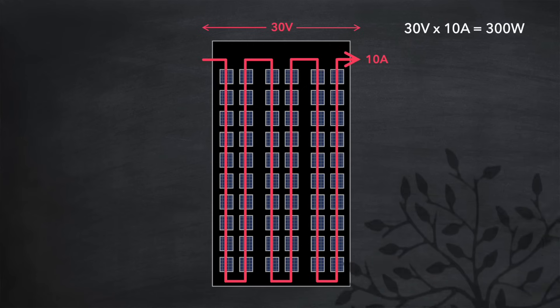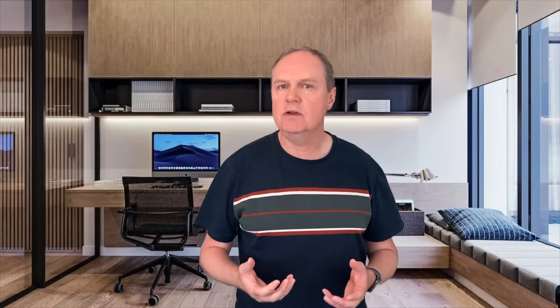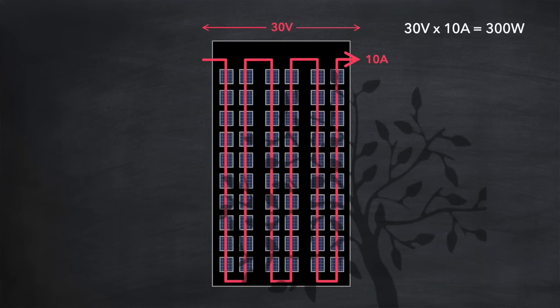Let's introduce some shading onto a few of the cells on this panel — let's say from a nearby tree. This type of shading is what we would call soft or diffuse shading, and it reduces the current flow through all of the cells experiencing that shading. Let's say the level of shading is around 10% across those affected cells. You might expect the impact on power output to be almost negligible — after all, there are only a few solar cells that are shaded, and even then they're still 90% operational. But here's the problem: because the current flow is reduced by 10% in those affected cells, the current flow through the entire panel is reduced by 10%, and therefore the total power output is reduced by 10% also, to 270 watts.